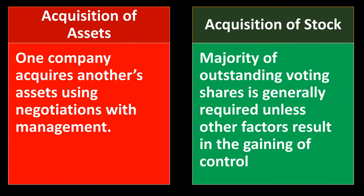We can break this down to the purchasing of assets versus the acquisition of stock. If we purchase the assets, one company acquires another's assets using negotiations with management. It might be more cumbersome to go line item by line item setting and negotiating the price for purchasing assets. However, you might have more flexibility — purchasing only those assets you want — compared to the stock acquisition method.